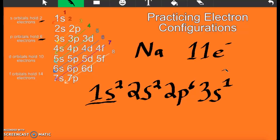A good way to check to see if you've done this correctly is these numbers. 2, 2, 6, and 1 should add up to your number of electrons. So 2 plus 2 is 4. Plus 6 is 10. Plus 1 is 11. This right here is your electron configuration of sodium.